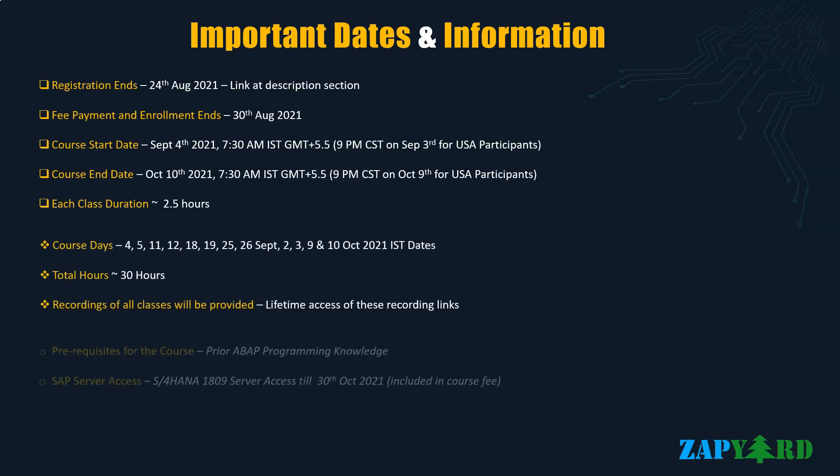Let us look at some important dates, times and other information. The first day of the training is on September 4th, 2021 at 7:30 AM IST — that is GMT plus 5.5 hours. So if you are in Europe, Africa or West Asia, you might not be able to join the live classes. This time suits better for participants from the Indian subcontinent, East Asia, Australia, New Zealand, and North and South America. Registration is open until 24th August 2021 and the payment and enrollment process should be complete by 30th August 2021.